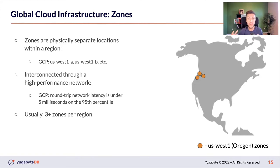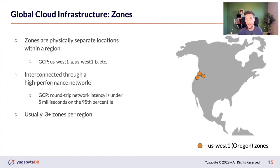Zooming into a region — let's select US West (Oregon) — every region consists of at least three availability zones. As the name suggests, availability zones improve availability of our applications. If one zone goes down, traffic and requests can quickly be redirected to a nearby zone. The zones within a single region are interconnected through a high-performance network. On Google Cloud Platform, the round-trip network latency is under 5 milliseconds at the 99th percentile — extremely great.